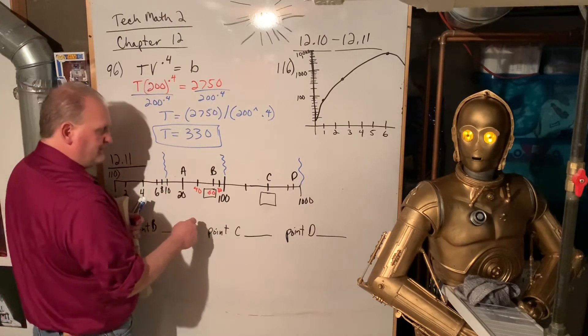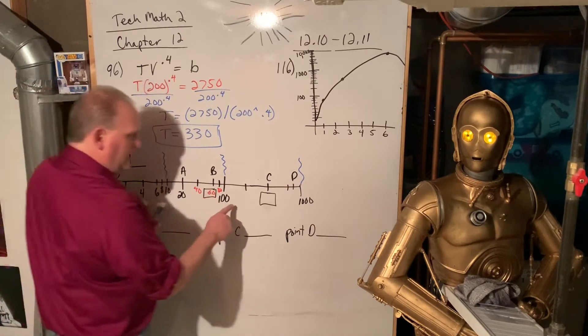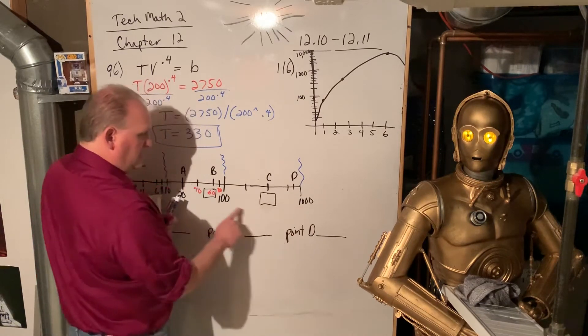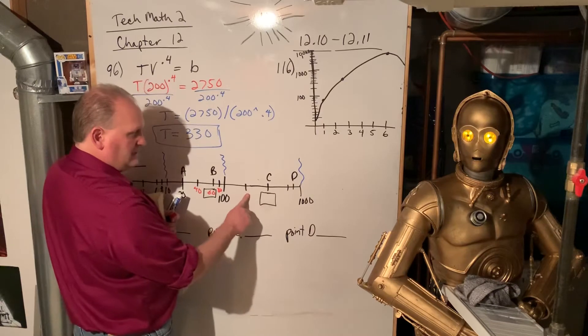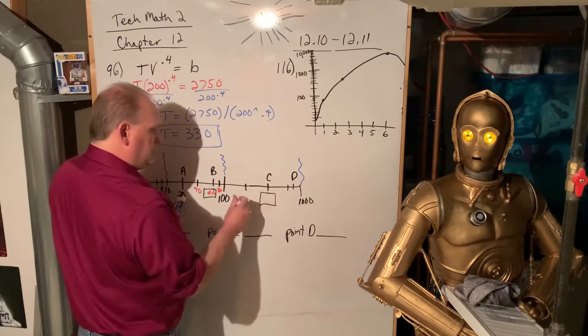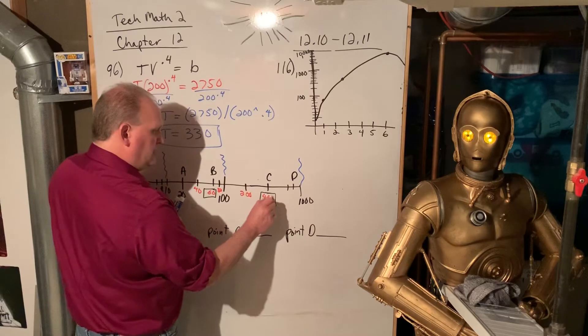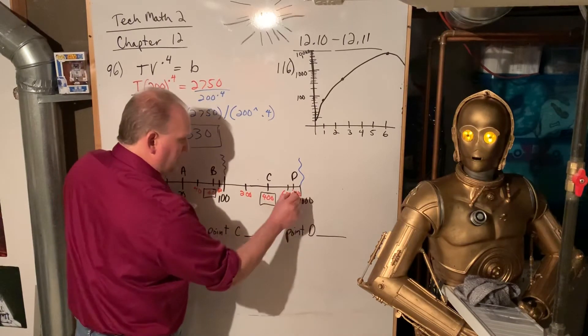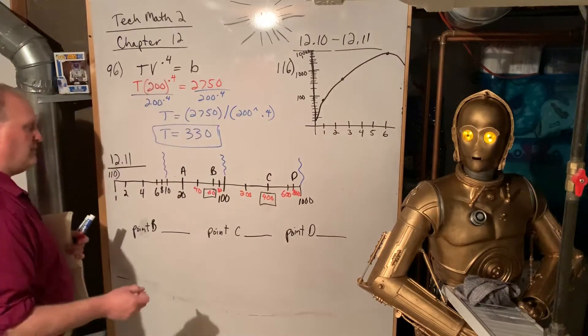And then now that's 100, but then the next thing is a thousand. So that's got to be 200, 400, 600, 800, 200, 400, 600, 800, 1000. And so now let's label it: b is 60, and c is 400, and d is 800.